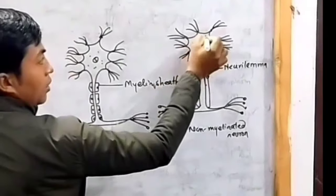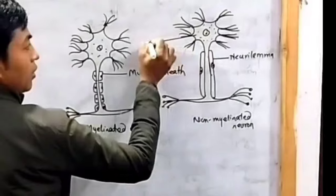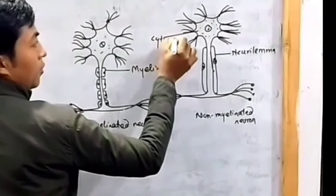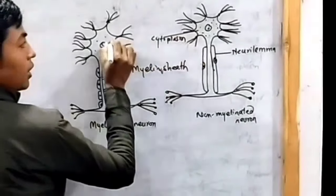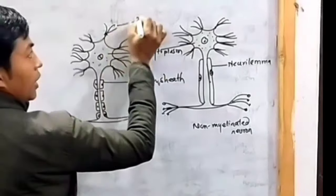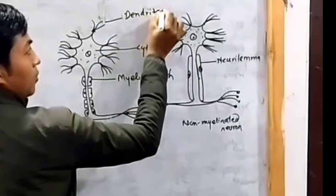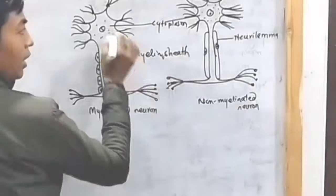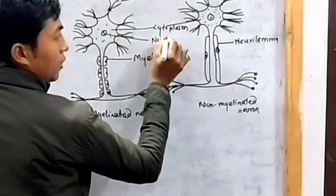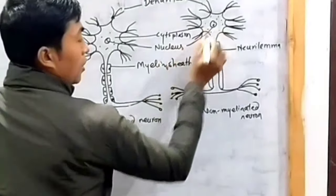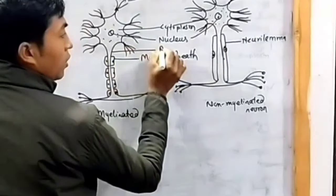This is the cytoplasm, these are the dendrites, this is the nucleus, and these are the axons.